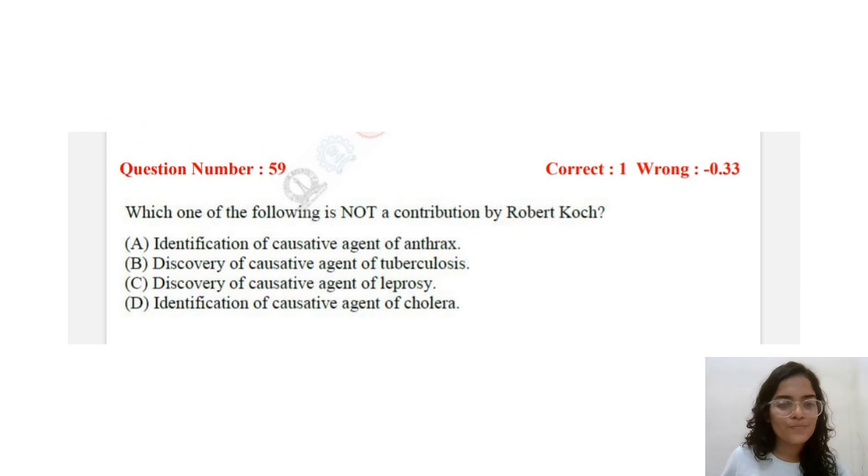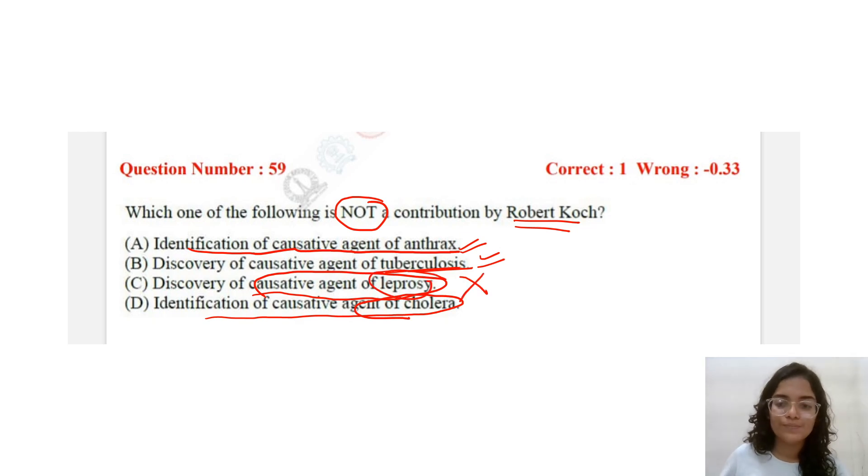Next question. Which one is not a contribution of Robert Koch? Identification of the causative organism of anthrax. He gave us the causative organism of anthrax, syphilis, leprosy, cholera. Leprosy he never gave it. Hansen has given it. So, the answer is C.